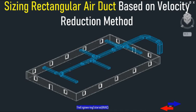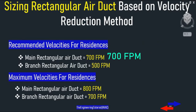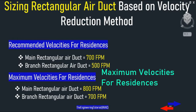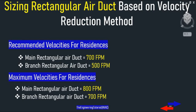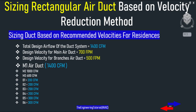The recommended velocities for residential main rectangular air duct is 700 FPM and 500 FPM for branch ducts. The maximum velocities for residential main rectangular air duct is 800 FPM and 700 FPM for branch ducts.